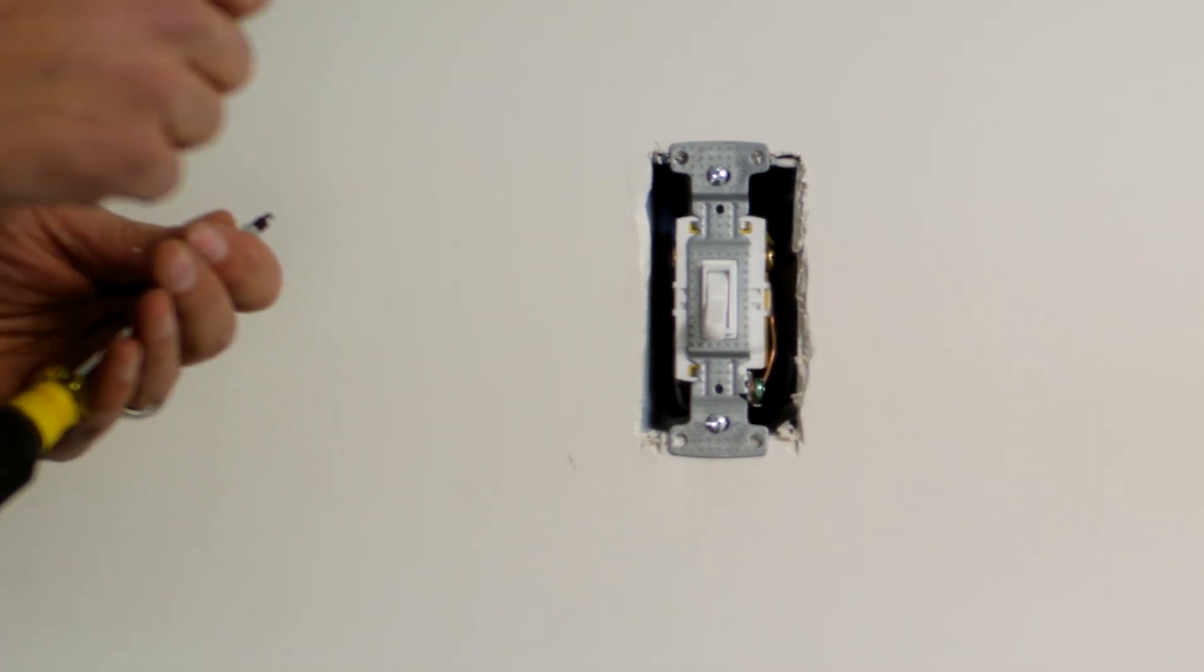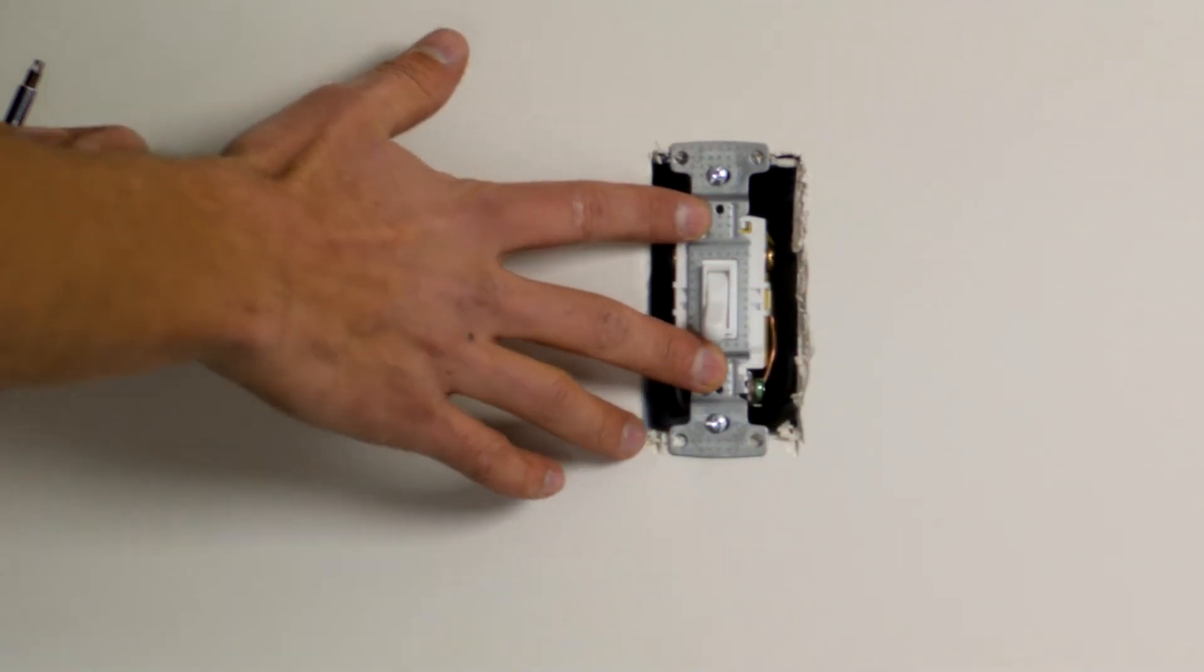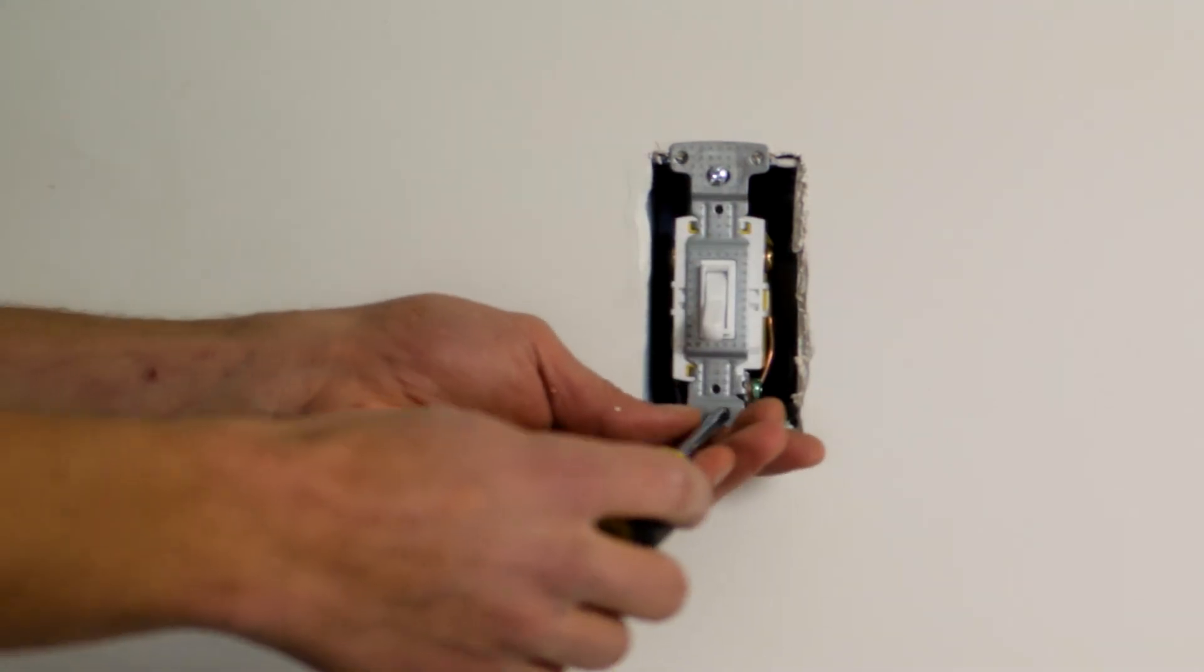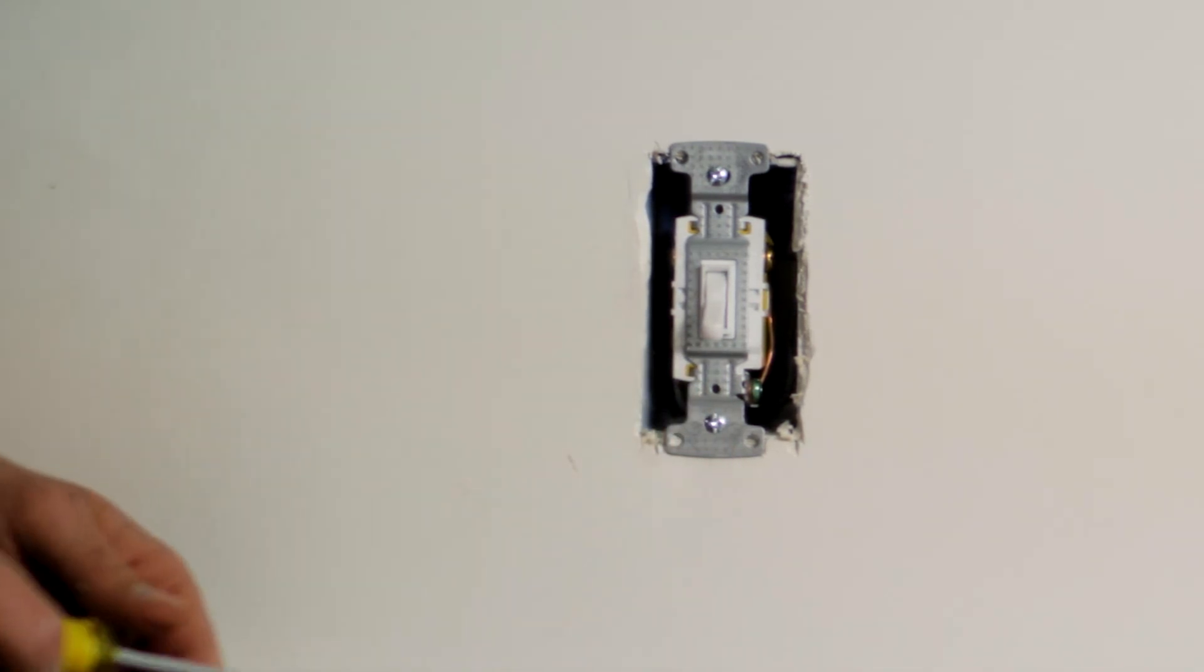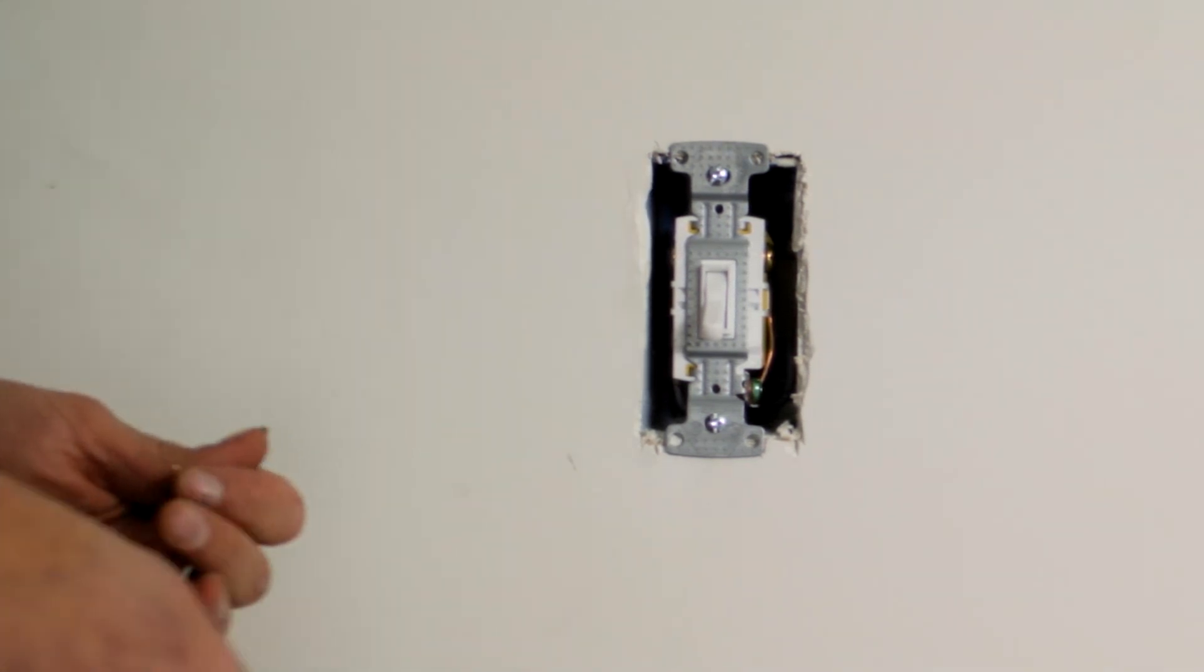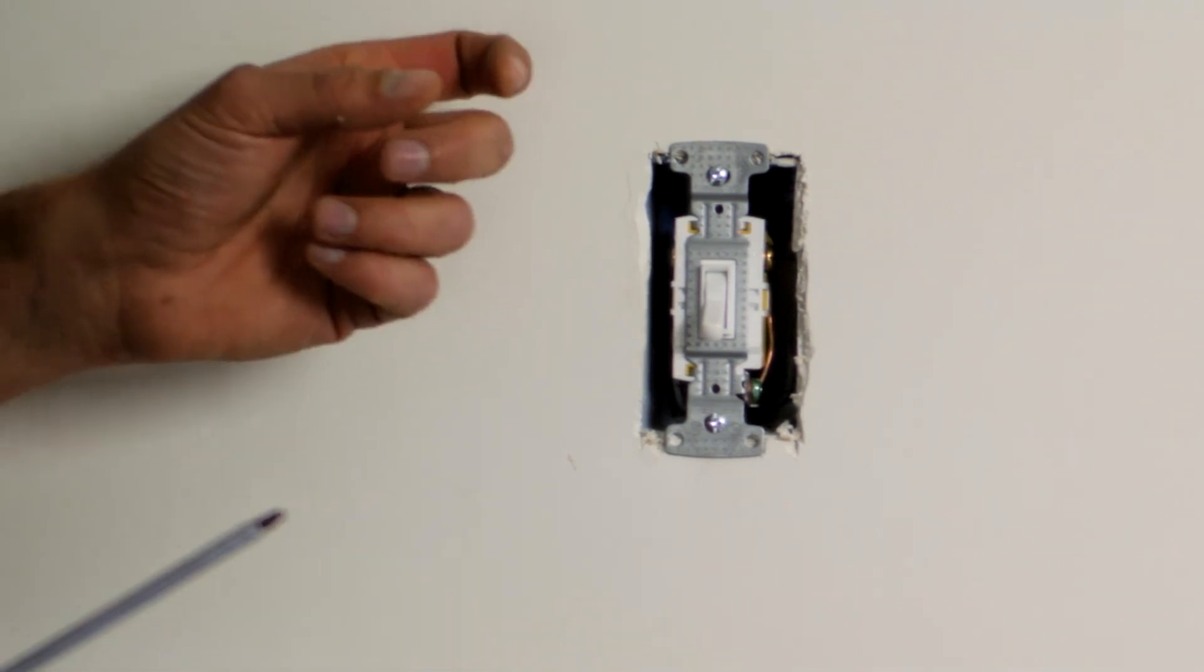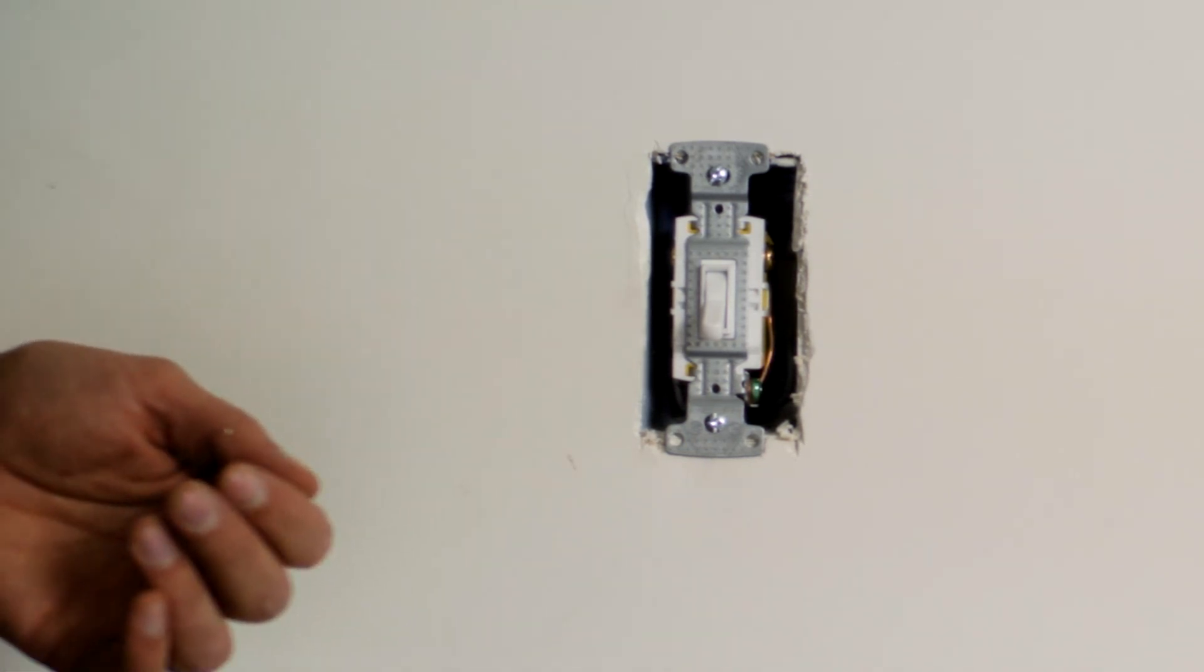In this case, it's secure. I've not deformed the switch at all by over-securing it. There's no play left in the switch, and I've got a good, clean finish. Something we mentioned on the rough-in is boxes spaced properly such that the yoke of the device secures to the box in a secure and tight manner. This being a combustible material, we've got a maximum of quarter inch that the box can be recessed behind the finished surface of the drywall.